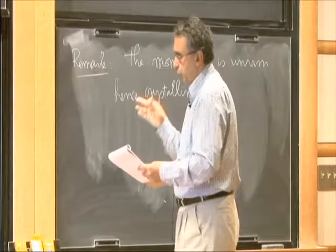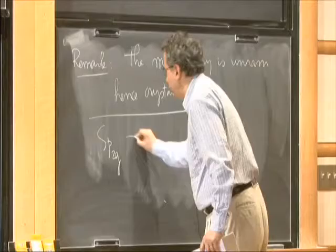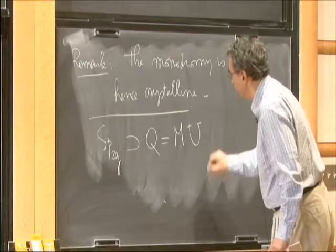This sheaf is locally free of rank g over Zp. Importantly, the monodromy for this sheaf is unramified, hence it is crystalline.